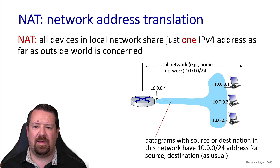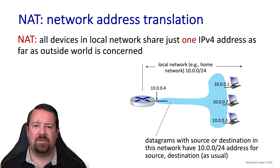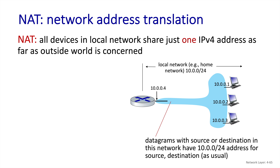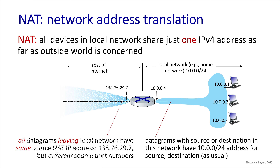On this local subnet, datagrams will use either source or destination addresses within this 10-dot space, depending on whether they're leaving or arriving at the subnet. From the host perspective, this is transparent. It places its own address in the source field and the public address of the server it's connecting to in the destination field. But NAT, which acts as a middle box, actually changes some of the header fields as the packet passes through it.